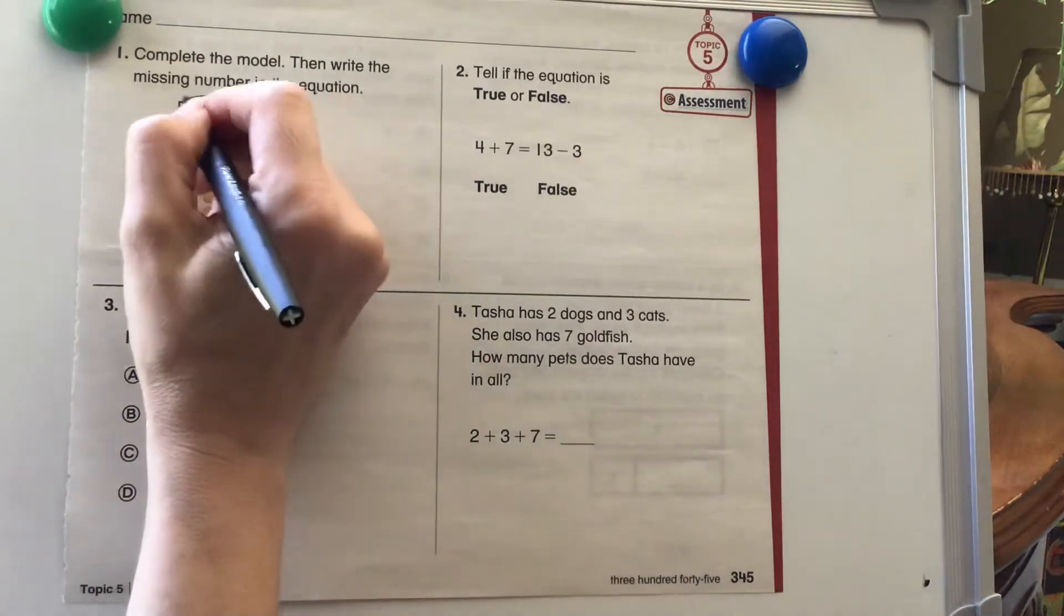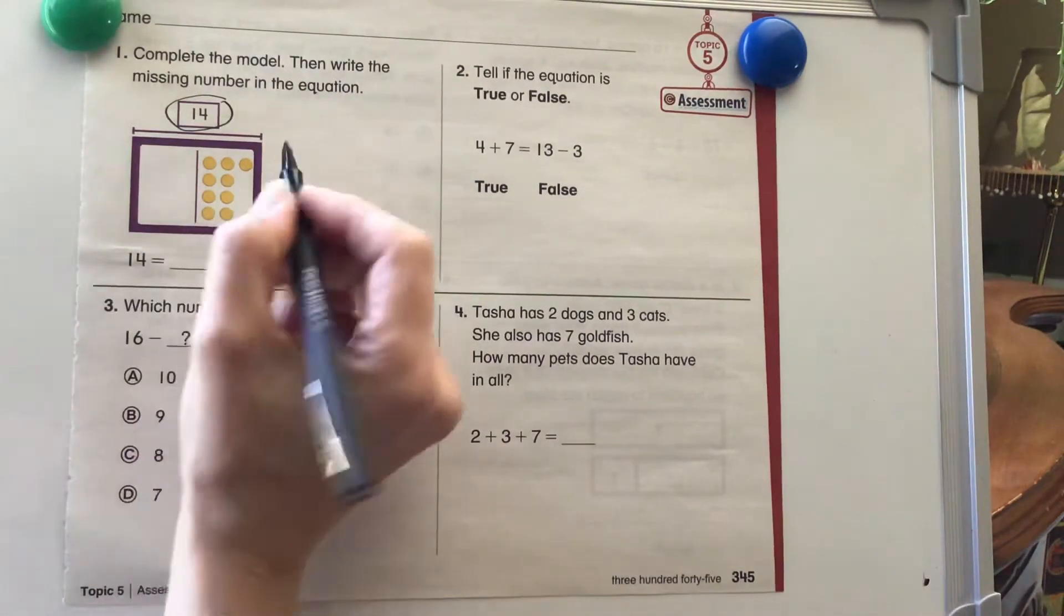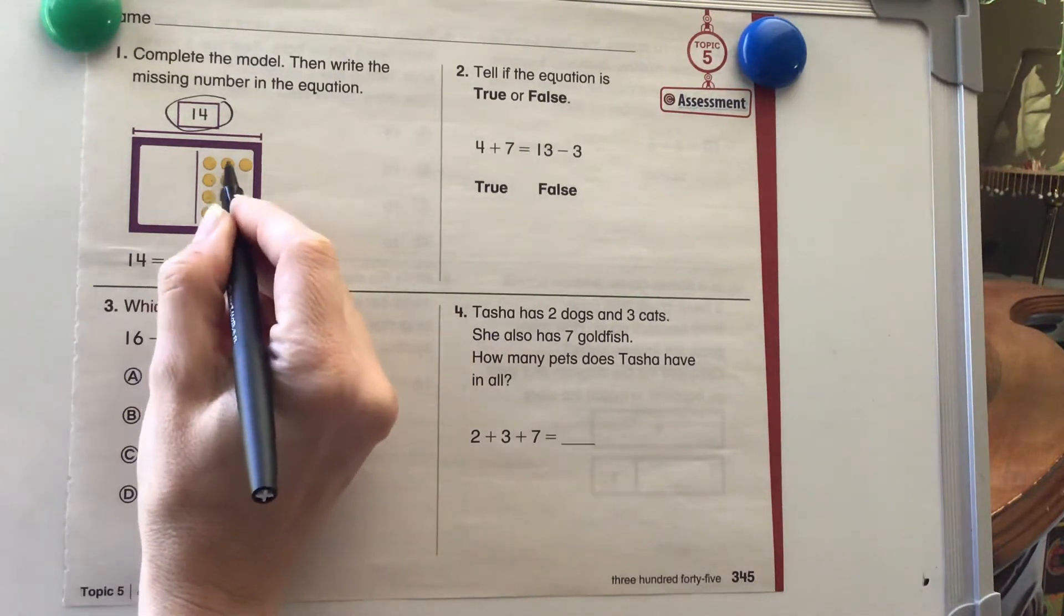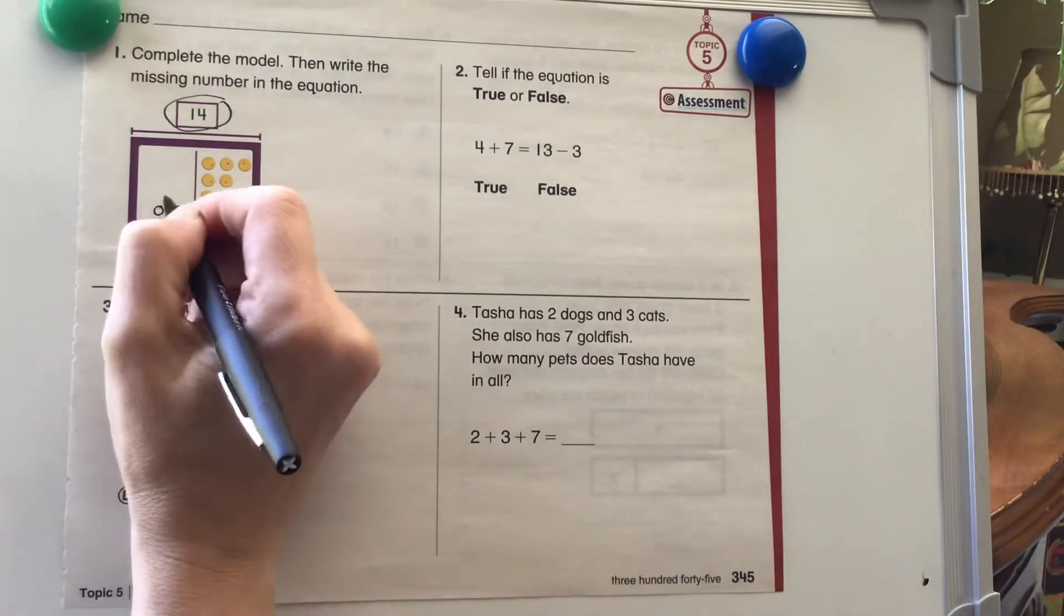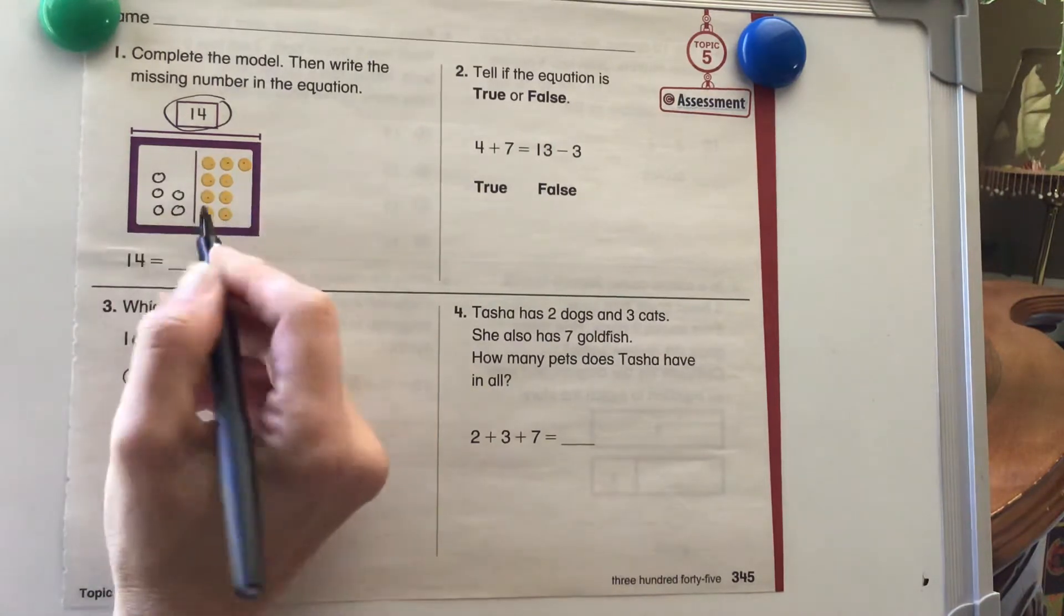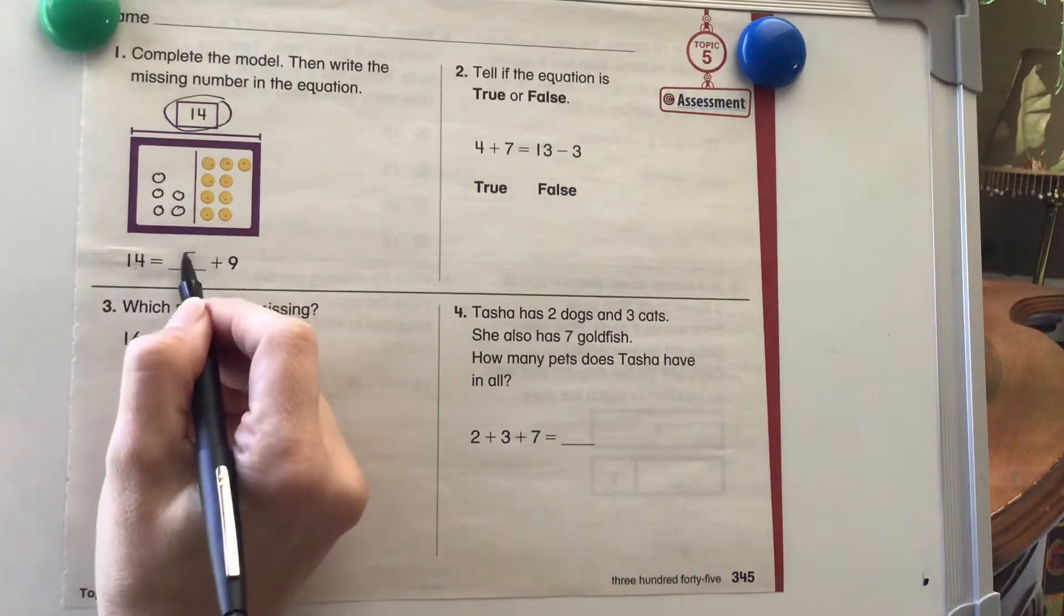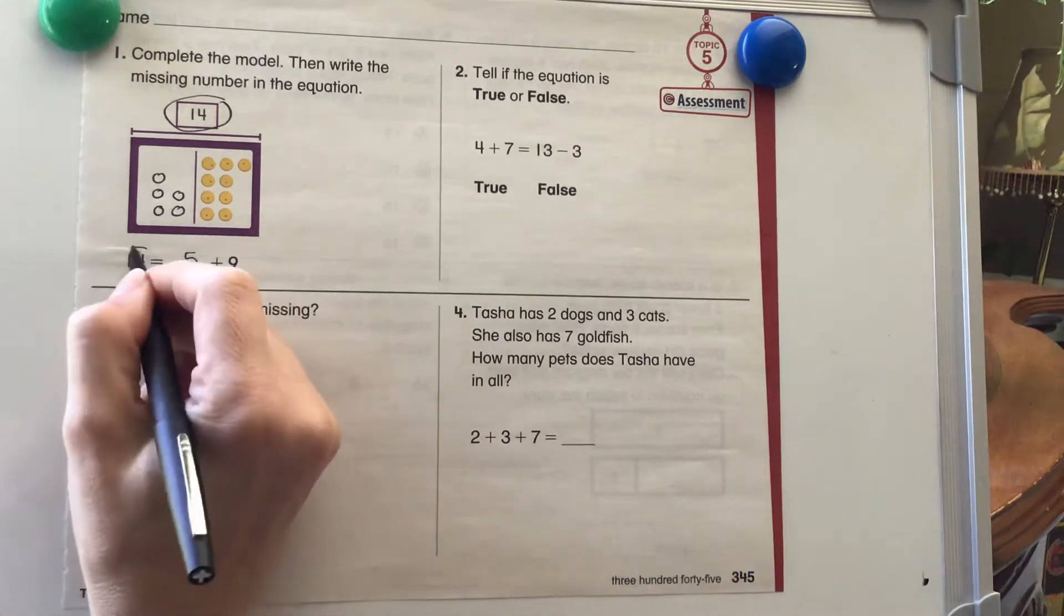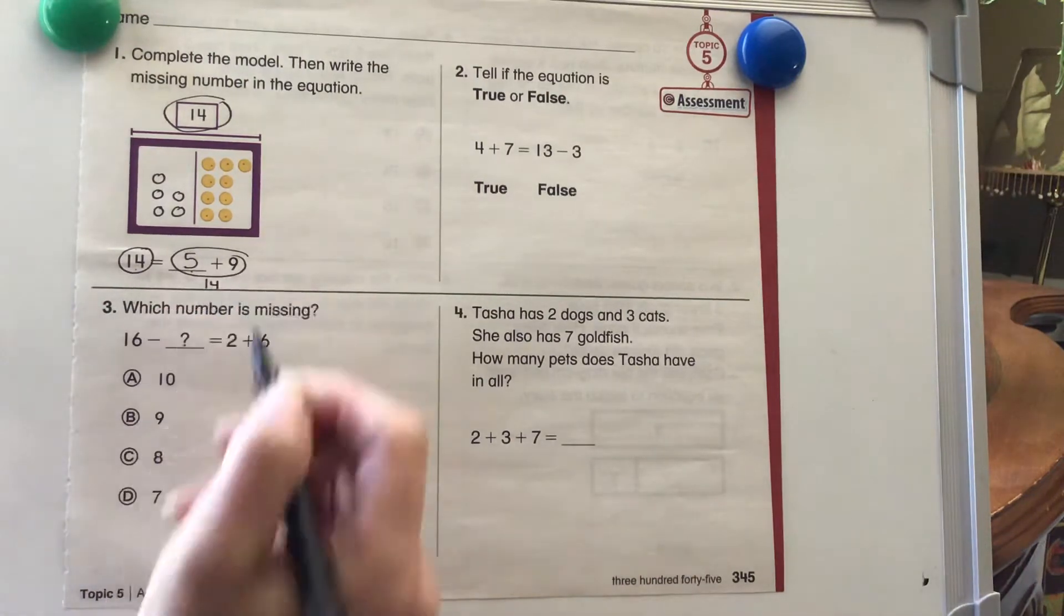So our total is 14. We need to get this on the bottom equal to 14. We have 1, 2, 3, 4, 5, 6, 7, 8, 9. So we need to count up: 9, 10, 11, 12, 13, 14. So we had to draw five more. We know that 14 equals 5 plus 9 because equal sign means the same as. 14 and that also equals 14.